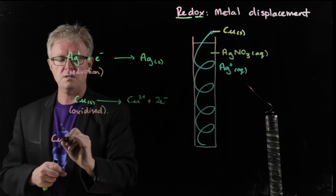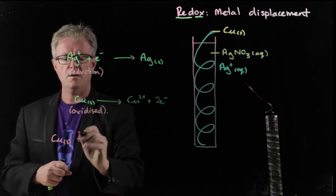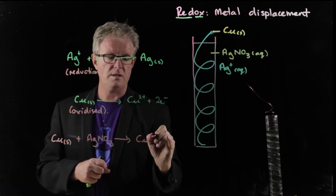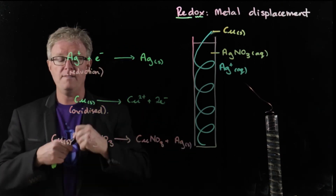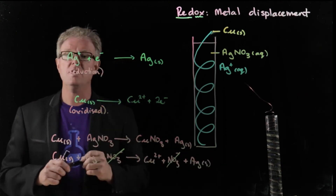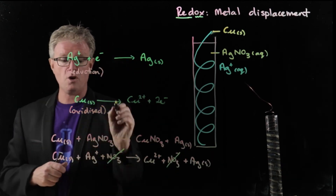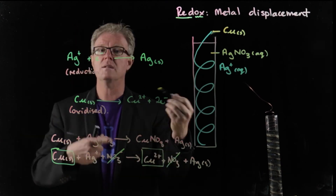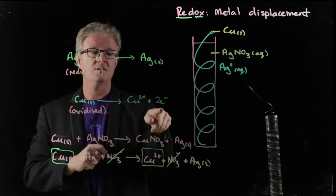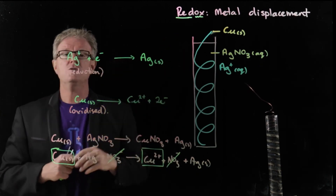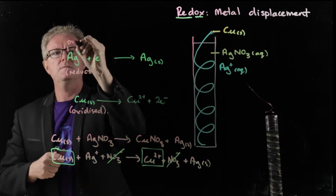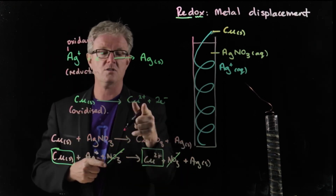These are half equations because the full equation involves solid copper reacting with silver nitrate. The net ionic equation shows Cu solid reacting with 2 Ag⁺ to give Cu²⁺ and 2 Ag solid. The half equations describe the process of electron loss and electron gain. The oxidation half equation shows copper losing electrons; the reduction half equation shows silver ions gaining electrons. Remember: the oxidant is the chemical species that causes the other to be oxidized while itself is reduced — so silver ions are the oxidant. The reductant is the species that causes the other to be reduced while itself is oxidized — so copper is the reductant.